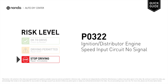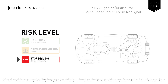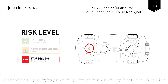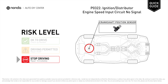P0322 is a diagnostic trouble code for ignition or distributor engine speed input circuit no signal. Under this circumstance, stop driving and repair your vehicle immediately. It indicates that the ECM has detected an erratic, interrupted, or otherwise unexpected input signal from the distributor or the crankshaft position sensor.